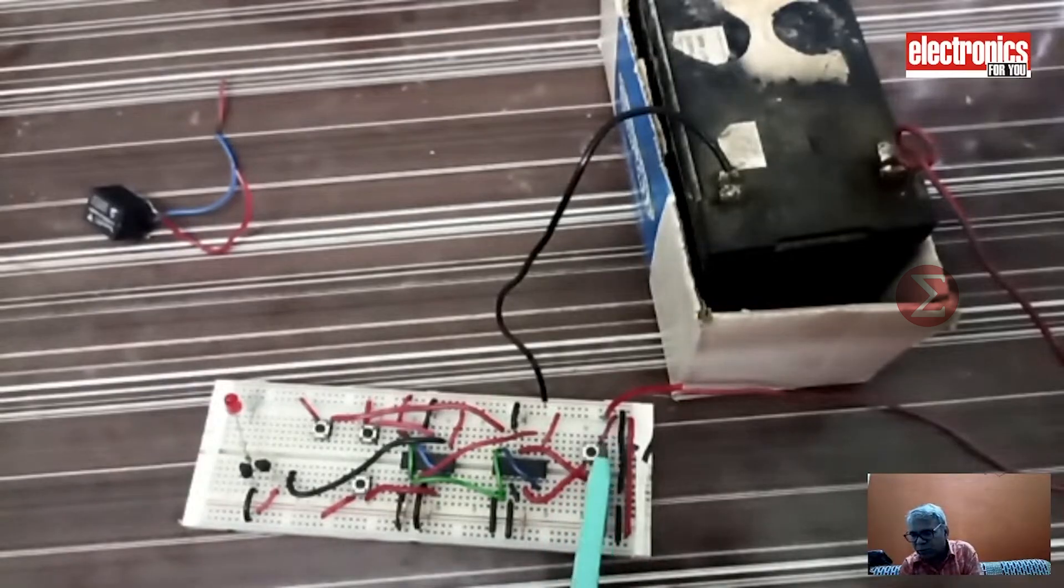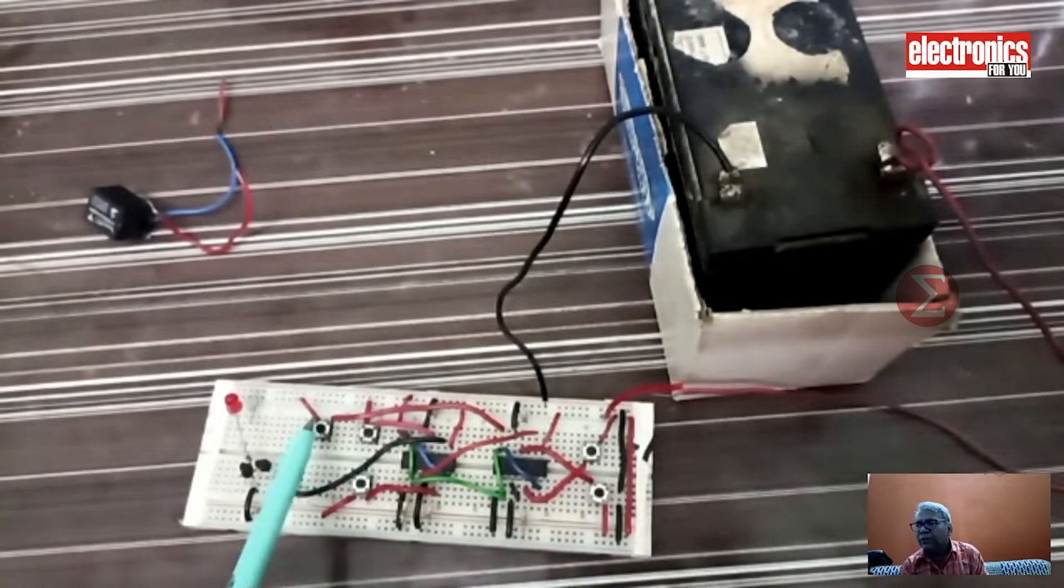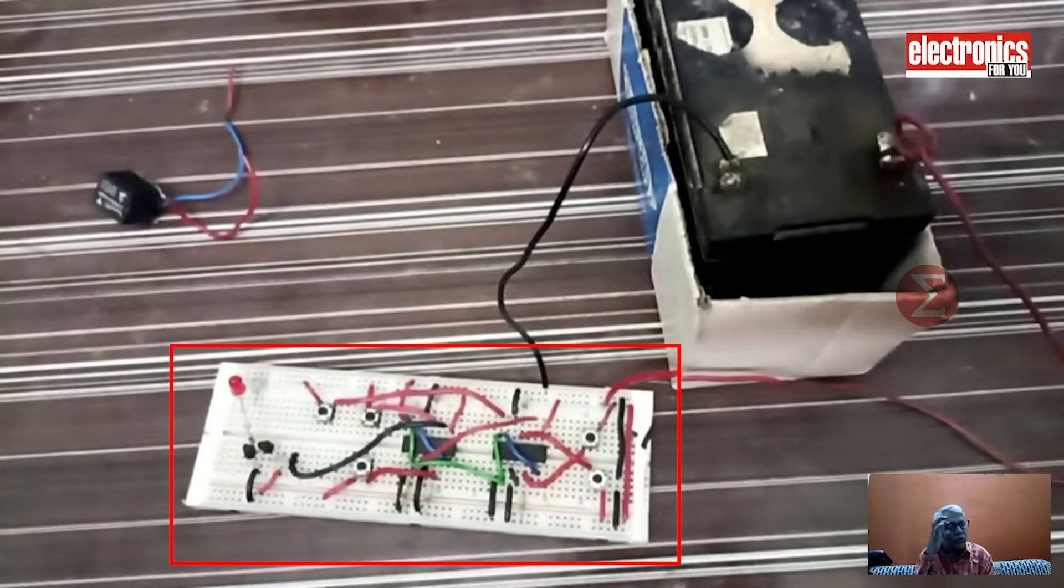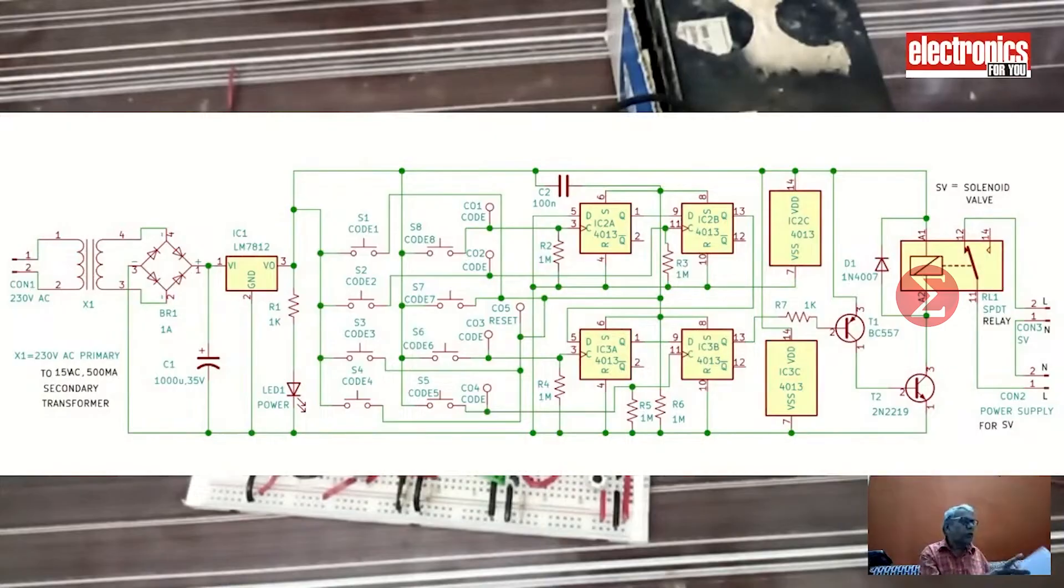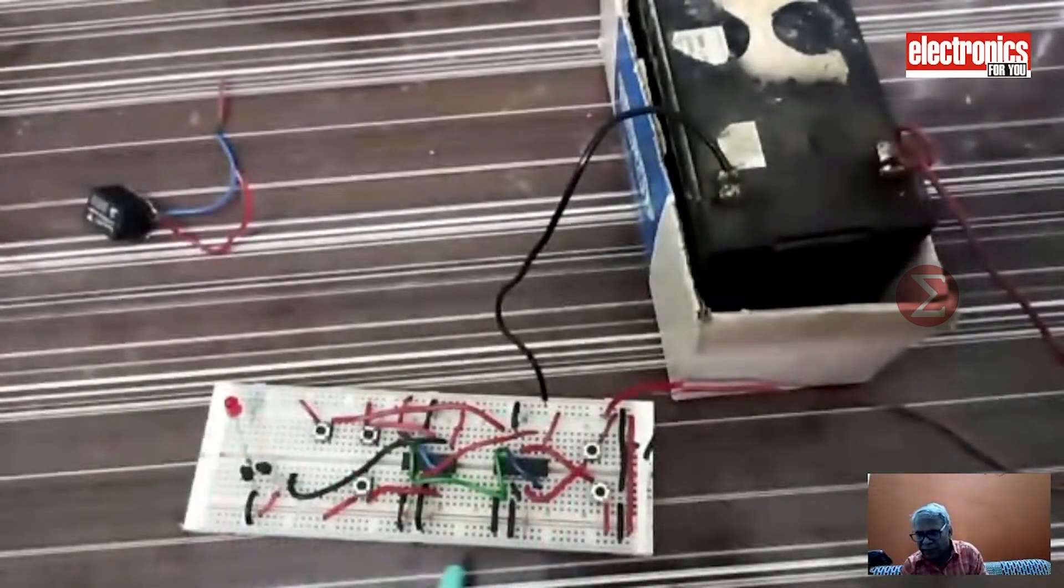The circuit is made such that if you press any other push button other than the correct code, the circuit will reset and the door will not open. You can see the circuit completely made on the breadboard. You can also connect this circuit with the help of a circuit diagram. Don't forget to take a common VCC and common ground pin to your circuit.